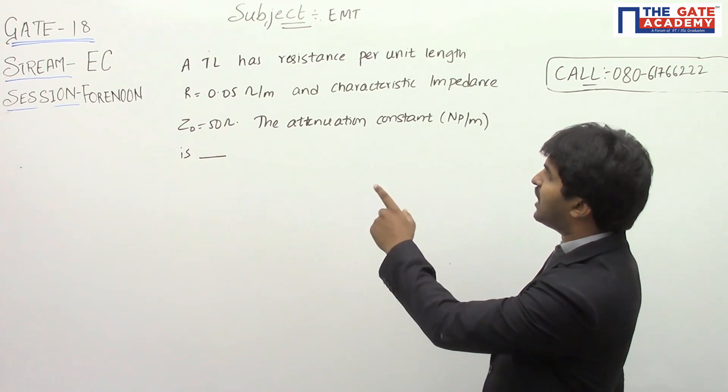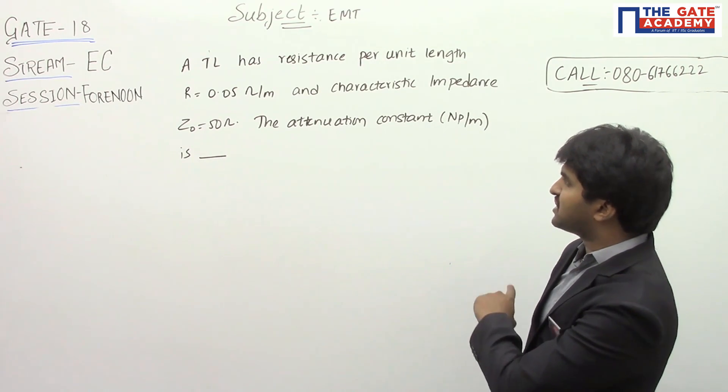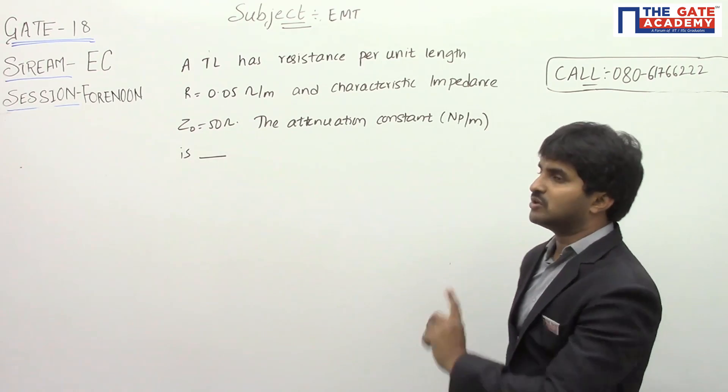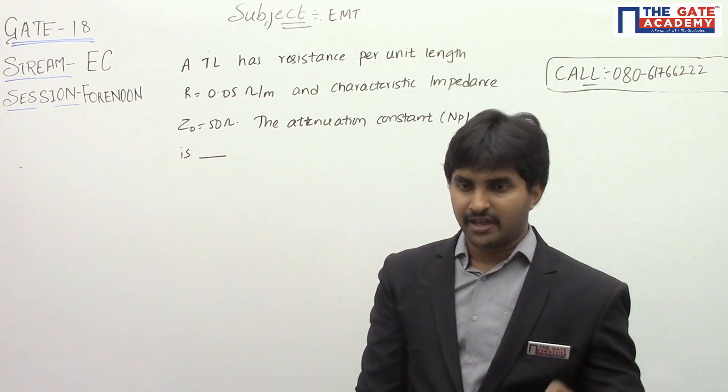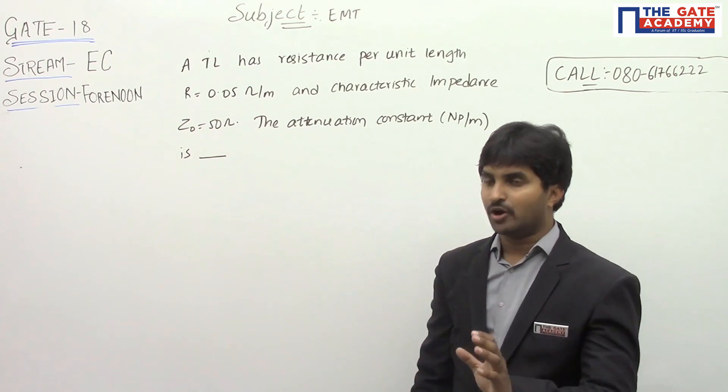A transmission line has a resistance per unit length R equals 0.05 ohm per meter and characteristic impedance of 50 ohm. The attenuation constant in terms of neper per meter is asked. It's a straightforward question; we have already solved this sort of problem in your classes.